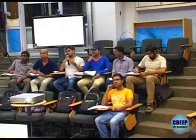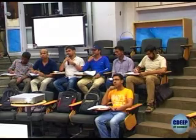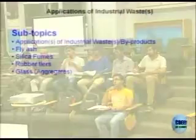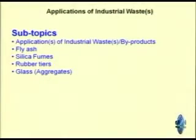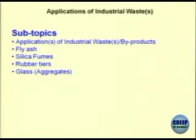Foundry sand is another material. Recycled aggregates — aggregate coming from the road — can also be included. Red mud and paper sludge are also options; in the last lecture we talked about paper sludge.